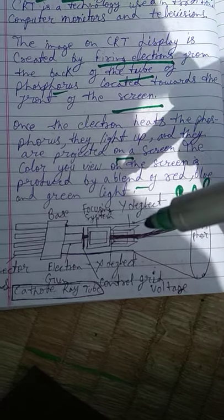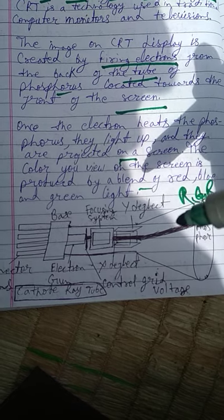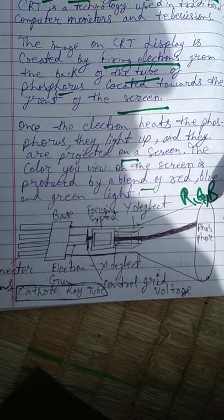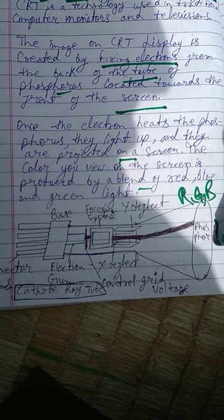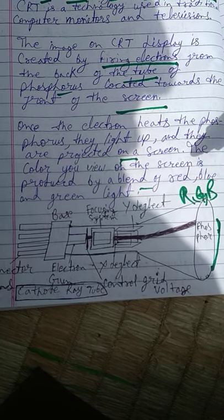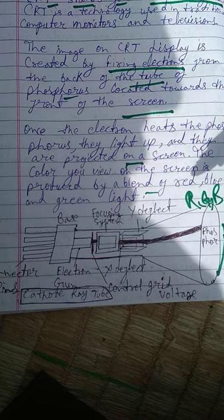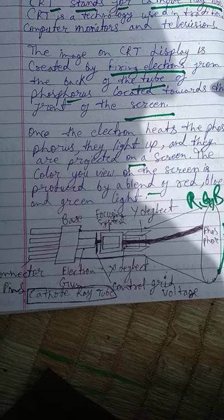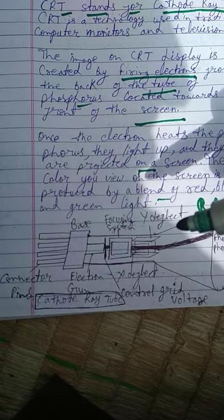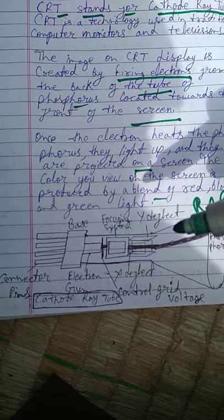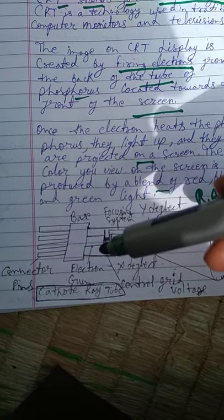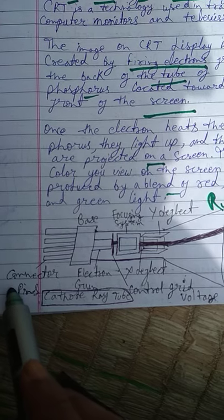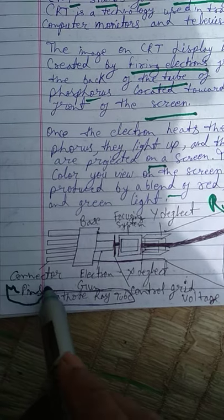The RGB combination — red, green, and blue — causes the electrons to produce light on the phosphor plate, which acts like a screen. This is how we can view images and objects on any CRT screen monitor. Now let's look at the CRT diagram and understand its parts.